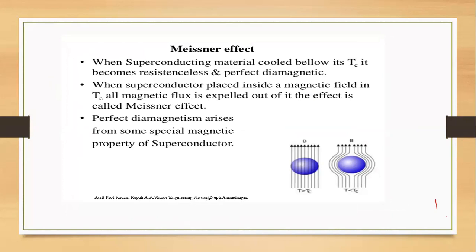In the Meissner effect, when T is greater than Tc, magnetic field lines pass through the specimen. But when T falls below the critical temperature Tc, the magnetic lines are expelled out from the specimen, forming the Meissner effect. The Meissner effect basically results in perfect diamagnetism.